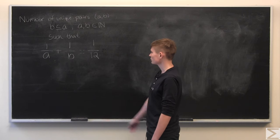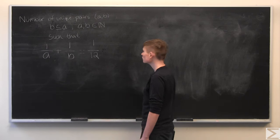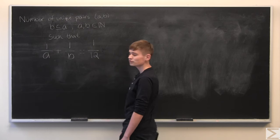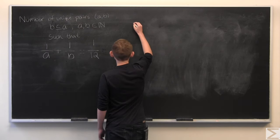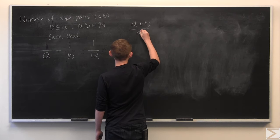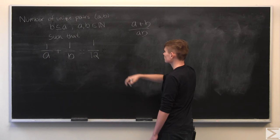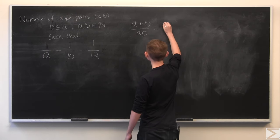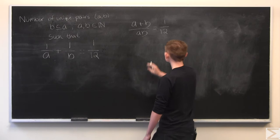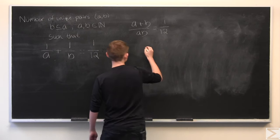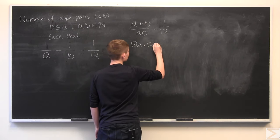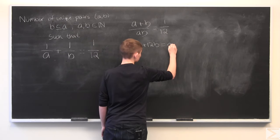So to get started we'll just start manipulating that equality and the first thing we're going to do is combine these into one fraction. So by combining them into one fraction we get a plus b over a times b is equal to 1 over 12, and then we can cross multiply and we get 12a plus 12b equal to a times b.